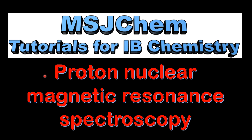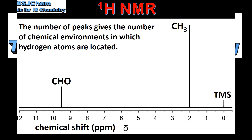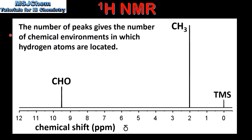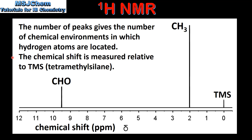This is MSJChem. In this video I'll be looking at proton nuclear magnetic resonance spectroscopy. We'll start by looking at a HNMR spectrum. The number of peaks on the spectrum gives the number of chemical environments in which hydrogen atoms are located. The chemical shift is measured relative to TMS, which is tetramethylsilane.